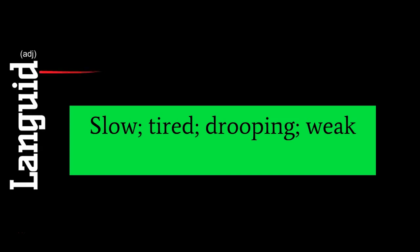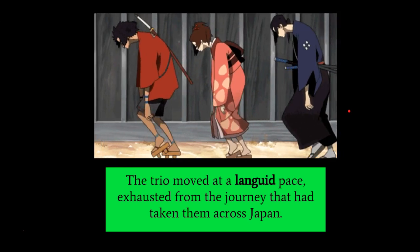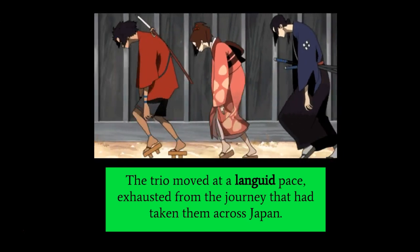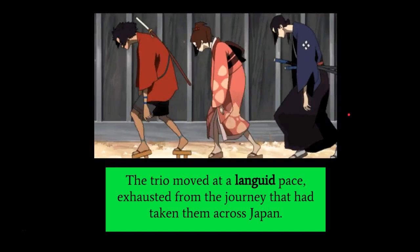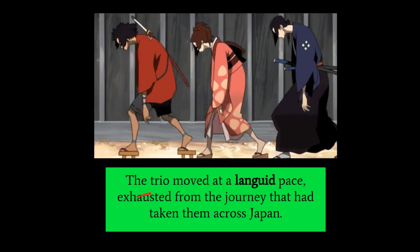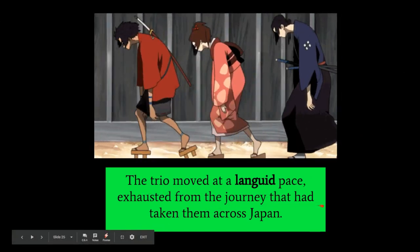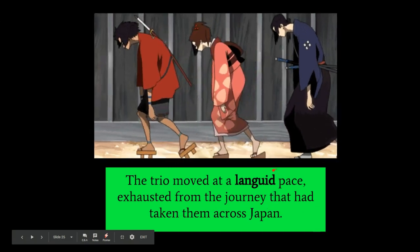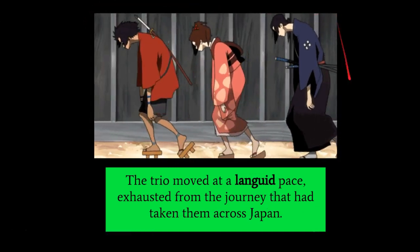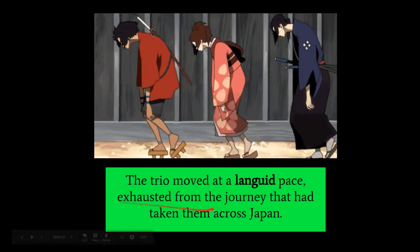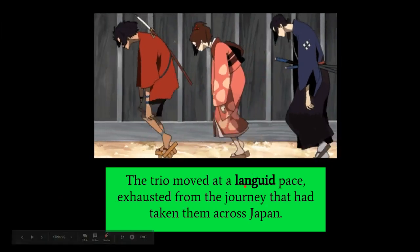Our next word is languid, which is an adjective meaning slow, tired, drooping, and weak. Sloths are languid, but so are the three people in this example: the trio moved at a languid pace, exhausted from the journey that had taken them across Japan. We see that they're exhausted from walking, and that makes them languid.